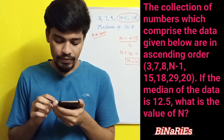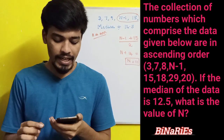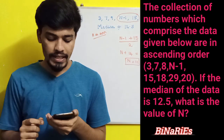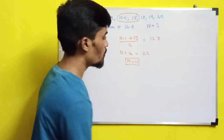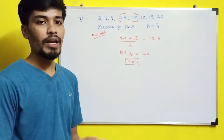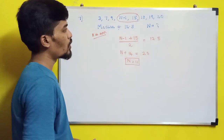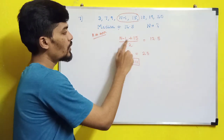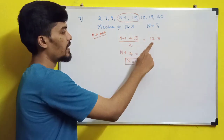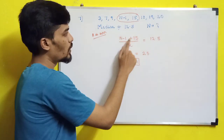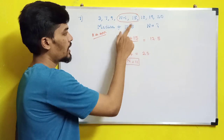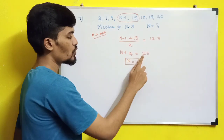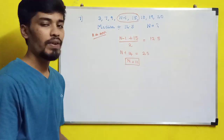The next question: the data 3, 7, 9, (n−1), 15, 18, 19, 20 is in ascending order. If the median is 12.5, what is n? There are 8 values (even count), so median = (4th value + 5th value) / 2. The 4th and 5th values are (n−1) and 15. So (n − 1 + 15) / 2 = 12.5, giving n + 14 = 25, so n = 11.